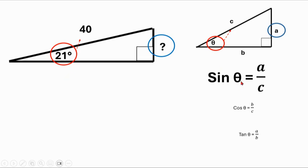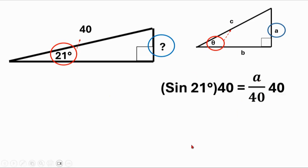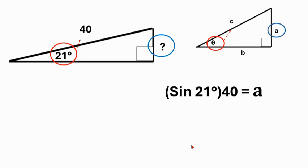I'm going to put 21 degrees in for theta and we're going to put 40 in for C, and we're going to solve for A, which is our missing side. Now we want to solve for A, so we need to get rid of this 40 on the bottom. We multiply both sides by 40, the 40s cancel out, and we get A is equal to sine 21 times 40.